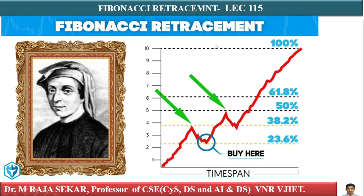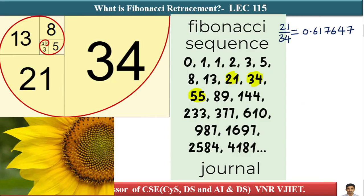This is Fibonacci retracement. The Fibonacci sequence starts: 0, 1. Then 0 plus 1 is 1, 1 plus 1 is 2, 1 plus 2 is 3, 2 plus 3 is 5, 3 plus 5 is 8. This is the summation of the previous two numbers. 5 is the summation of 2 plus 3, and 8 is the summation of 5 plus 3.